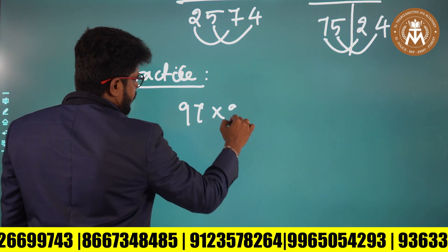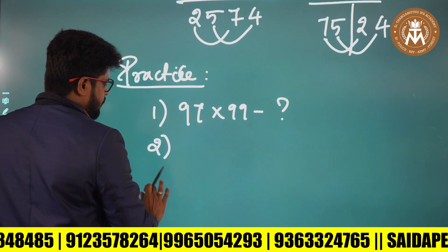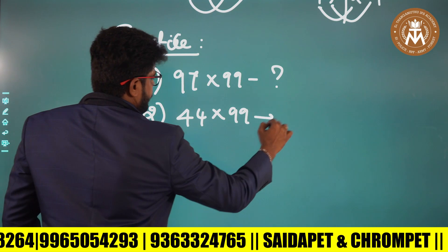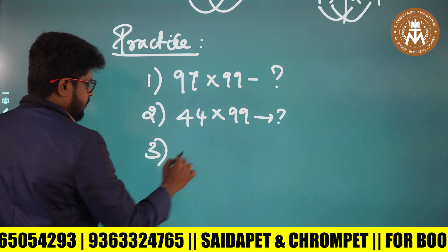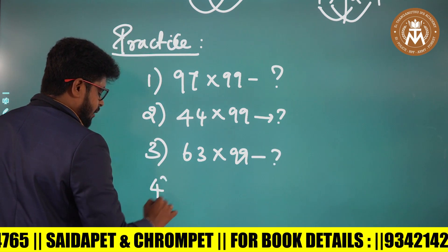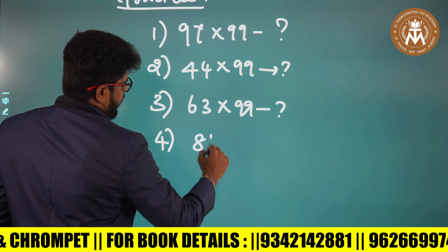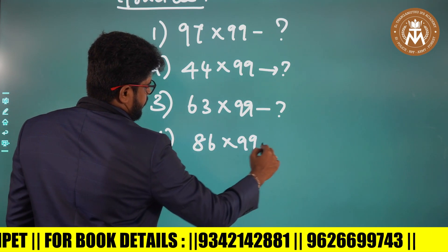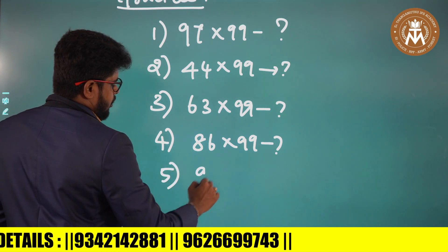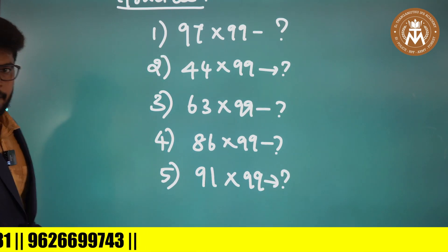Practice questions: Question number 1 — 7, 8, 9 into 9. Question number 2 — 44 into 9. Question number 3 — 63 into 9. Question number 4 — 86 into 9. Question number 5 — 91 into 9. What is the answer? You can do this for your practice.